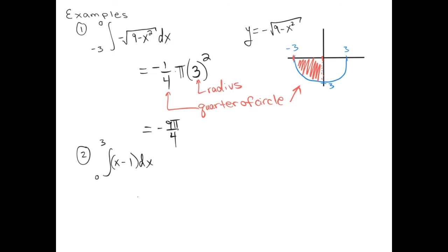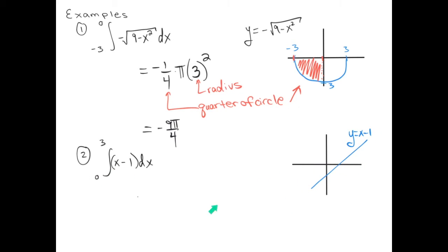Let's do another example. For number 2, we're going to graph y equals x minus 1. Remember that y equals x minus 1 has slope 1 and y-intercept negative 1. We're looking for the net area between this line and the x-axis from x equals 0 to x equals 3. The x-intercept of this line occurs at x equals 1.